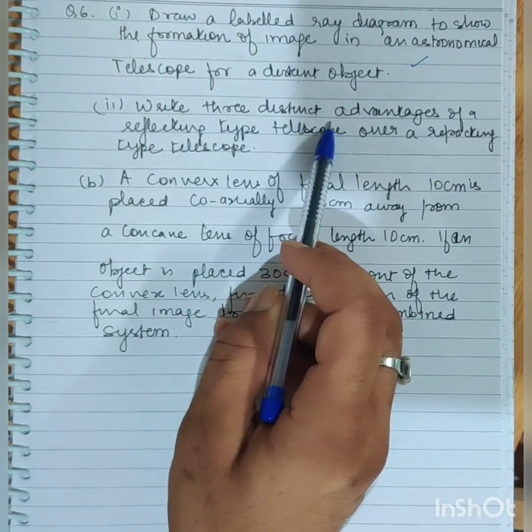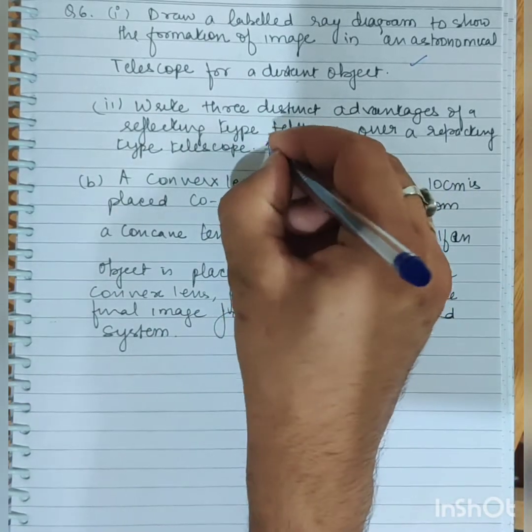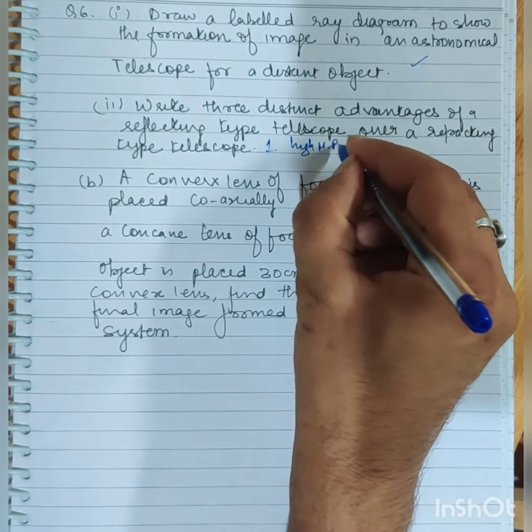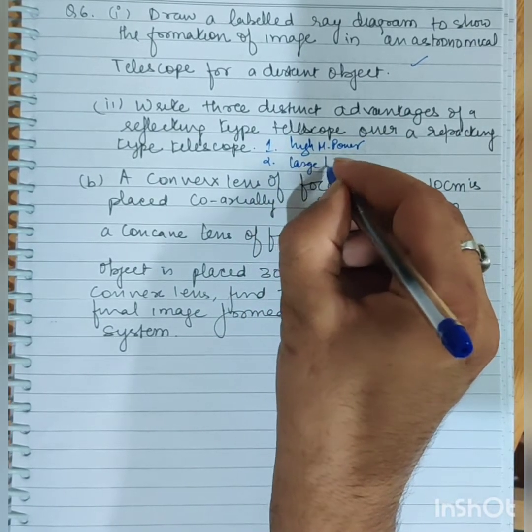Write three distinct advantages of reflecting type telescope over a refracting type. First advantage is that high magnifying power. Another advantage is large light gathering power.